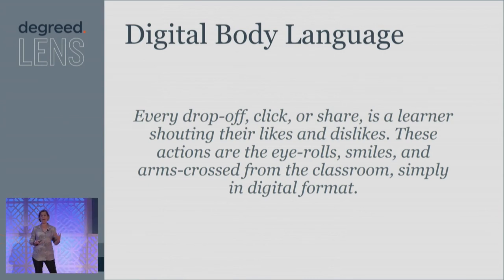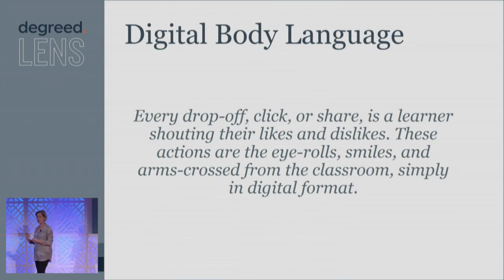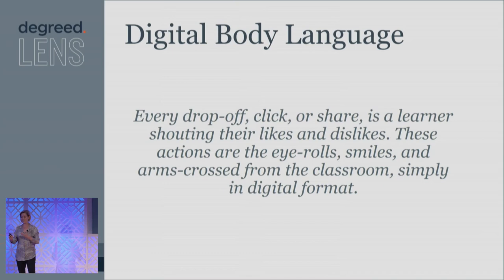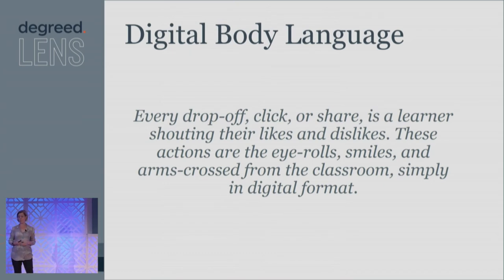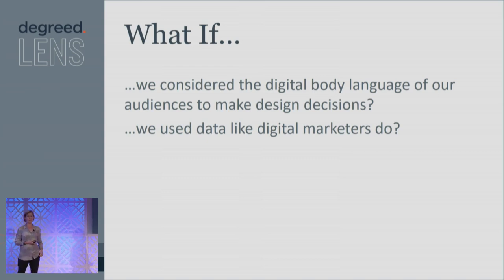So back in the classroom, we had the body language. When we see people online, they're actually telling us a lot of things, but we're not paying attention to what that digital body language actually is. When people drop off or go elsewhere, they're telling us what they like and dislike. But we've only been focusing on the completion. Everything from the amount of time they spend on something to whether they comment or give it a like are all translated into what can be called digital body language. So what does this mean? What if we considered DBL when we made design decisions? And what if we used data like digital marketers do? Our world would look a lot different.